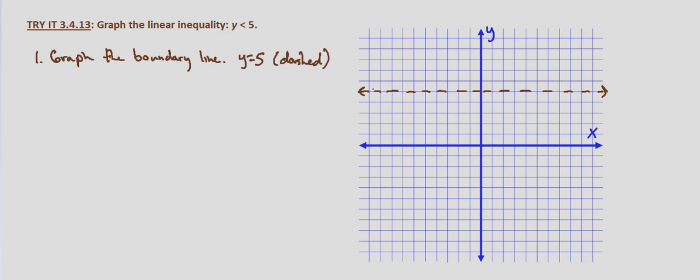So y is less than 5. We can test a point, but when it's horizontal, if it's less than, it's going to be below.